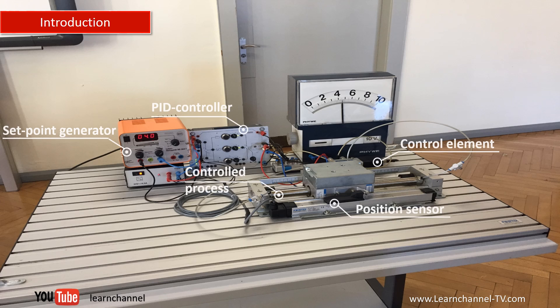The experimental setup with all its components and their function is shown here. As a controlled system serves a pneumatic linear cylinder with exhaust air throttles to reduce the stick-slip effect. A proportional valve allows the PID controller board to position the cylinder steadily.